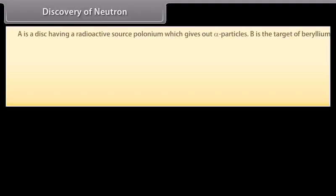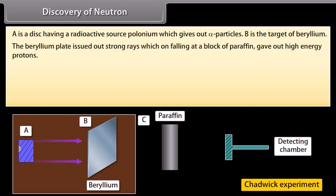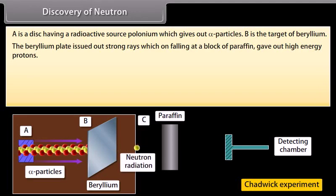Discovery of neutron. A is a disk having a radioactive source polonium which gives out alpha particles. B is the target of beryllium. Both A and B are placed in an evacuated chamber C. The beryllium plate issued out strong rays which on falling at a block of paraffin gave out high energy protons.